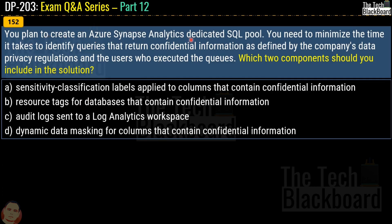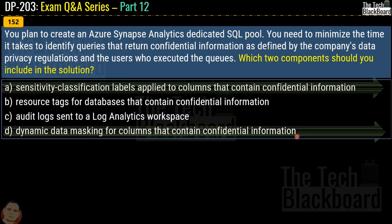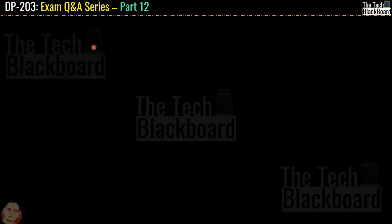Question 152: you plan to create an Azure Synapse Analytics dedicated SQL pool. You need to minimize time to identify queries returning confidential information and the users who executed them. The options include sensitivity classification labels, resource tags, audit logs sent to a Log Analytics workspace, and dynamic data masking. The correct answer is option A (sensitivity classification labels applied to columns containing confidential information) and option D (dynamic data masking for those columns).